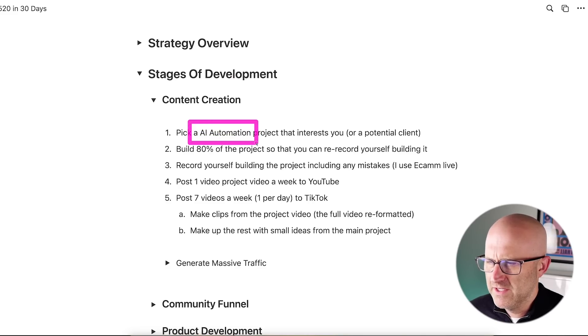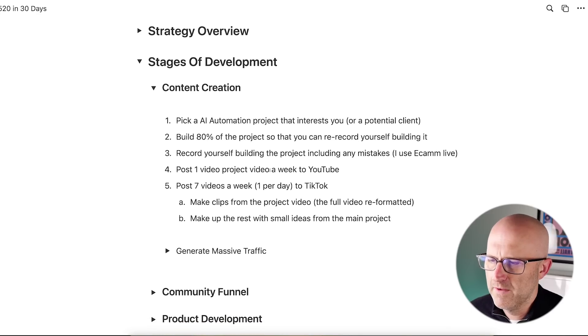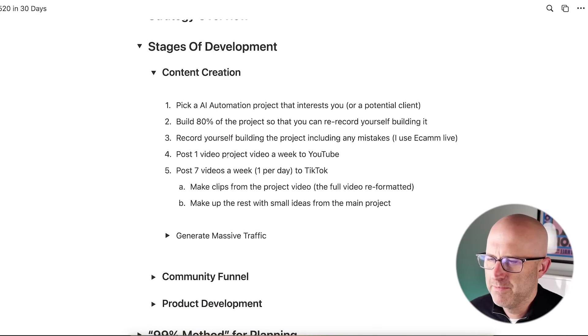This type of content is so flashy that it really does all of the work for us. And as we create different projects that we build, we can turn those into products. So all you have to do each week is pick a single AI automation project that interests you or a potential client. Then what you do is you build 80% of that project so that you can re-record it building yourself. Make sure you've identified all the things you don't know so that you don't stumble through those while you're recording it. I say 80% because you don't need to perfect it. That last 20% you can just figure out while you're recording it. And then just go ahead and record yourself building that project.